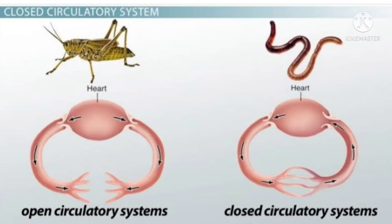The other type of transportation system, where blood flows in blood vessels and takes responsibility for delivering materials, is called the closed type of circulatory system — CCS. The best examples of closed circulatory system are annelids, echinodermates, cephalopods, mollusks, and higher animals.